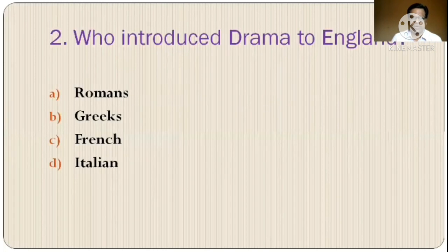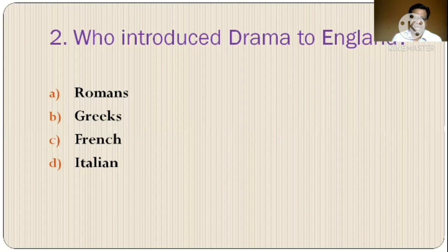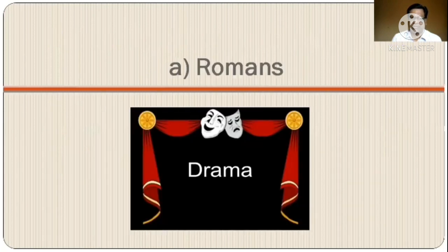Question 2: Who introduced drama as a genre of literature to England? Options are: A) Romans, B) Greeks, C) French, D) Italian. The correct option is option A, Romans.